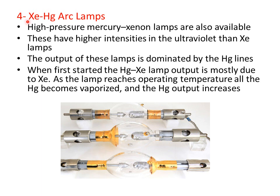Another light source is the xenon-mercury arc lamp. High pressure mercury-xenon lamps are available and have higher intensities in the ultraviolet region compared to xenon lamps alone. Their output is dominated by mercury lines. At startup, the output is mostly due to xenon, but as the lamp reaches operating temperature, all the mercury becomes vaporized, so most of the emission is then due to mercury.